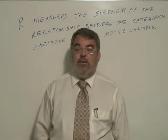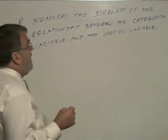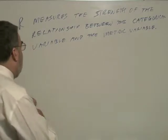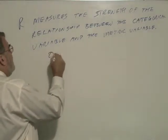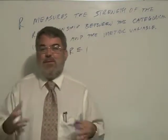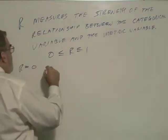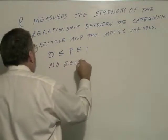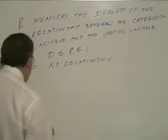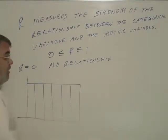One of the things we're measuring is capital R. Capital R measures the strength of the relationship between the categorical variable and the metric variable. R is between 0 and 1, so there's no such thing as a negative relationship. R equals 0 means no relationship — that's sort of like no correlation. In analysis of variance, that means you have a uniform distribution across all the groups.